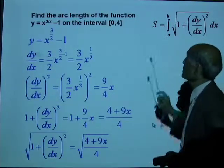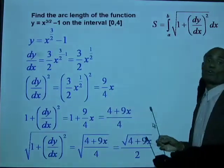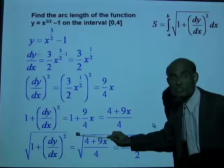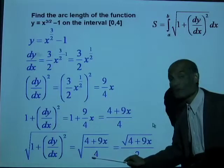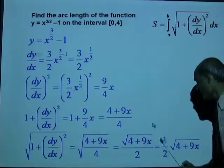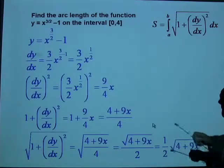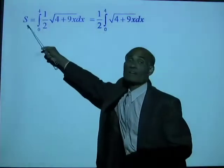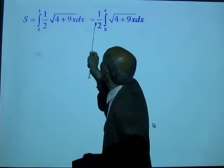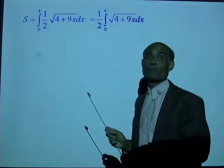So the arc length is: s = ∫[0 to 4] (1/2)√(4 + 9x) dx = (1/2)∫[0 to 4] √(4 + 9x) dx. To integrate this, we use the substitution 4 + 9x = u, so 9 dx = du, meaning dx = du/9.